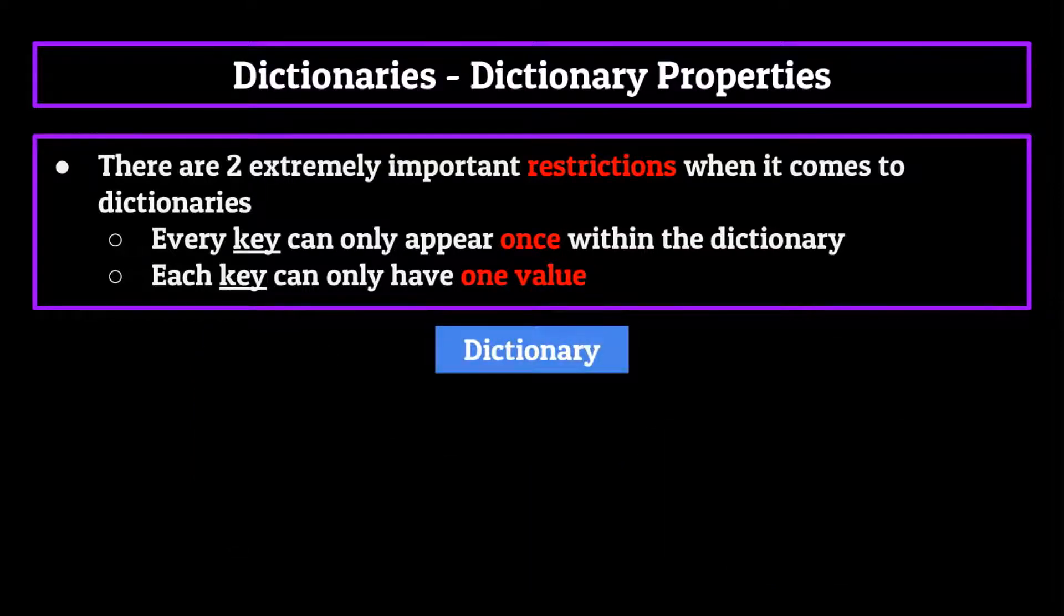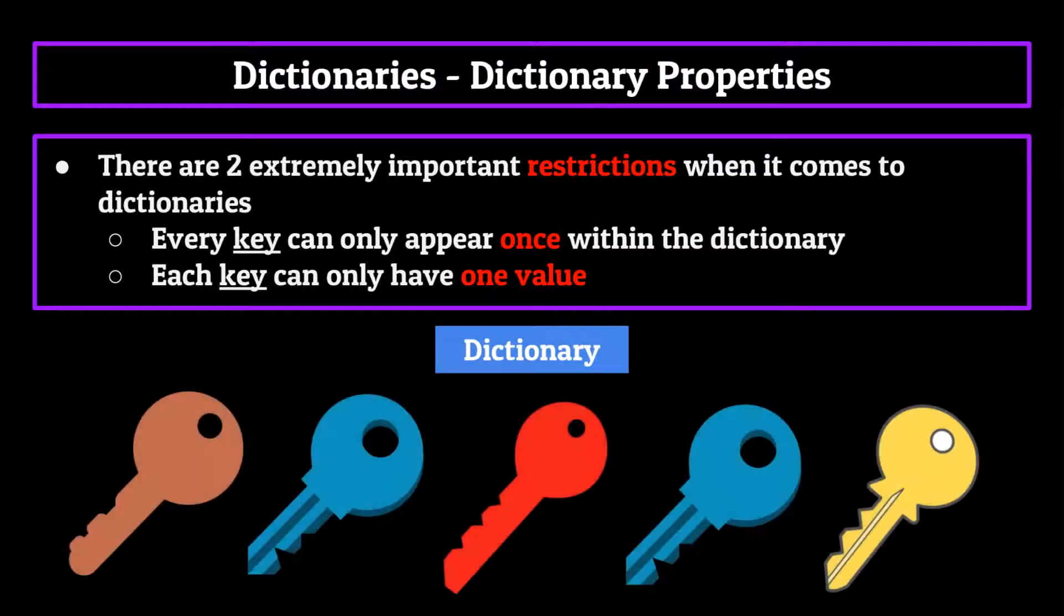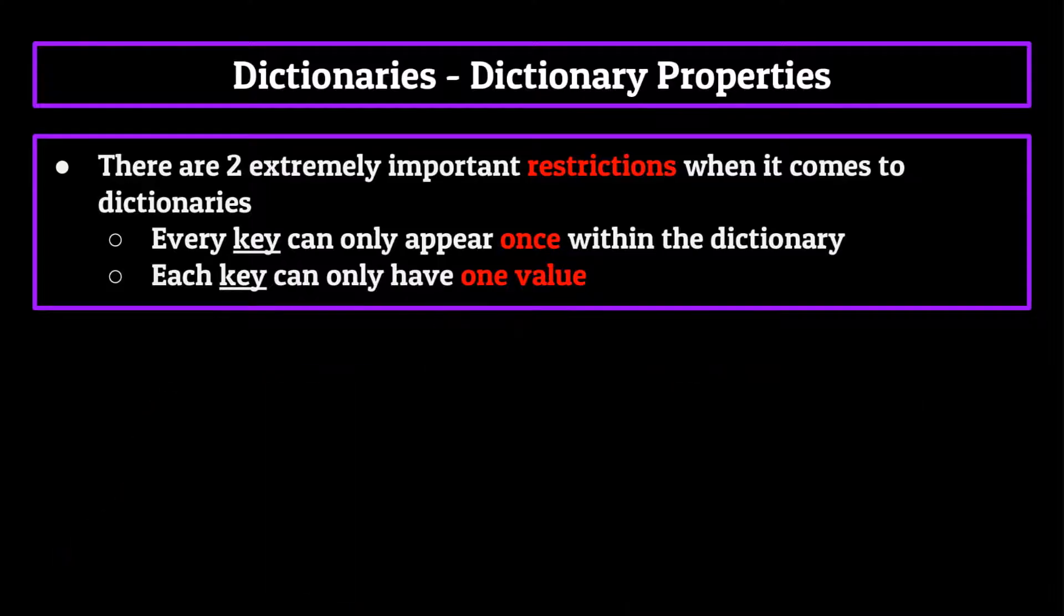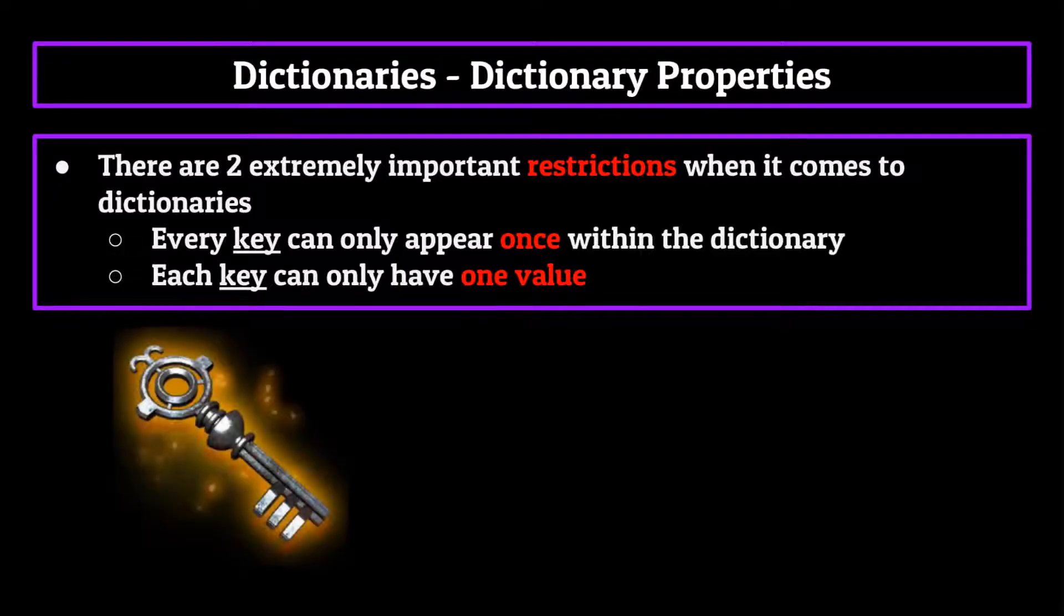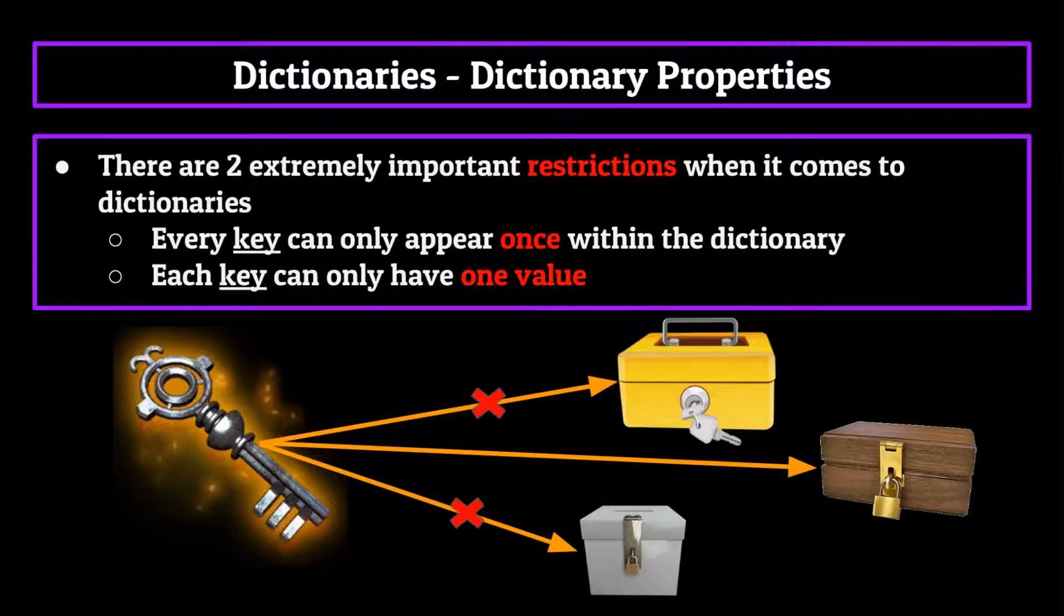If you were to try to make a dictionary with two similar keys, you would get thrown an error. The second stipulation is that each key can only have one value. Think back to our custom key, it wouldn't make sense for this one of a kind key to be able to open multiple boxes. The same is true for our keys in computer science, they can only go towards one value.